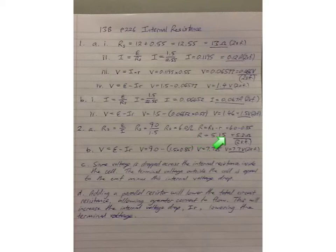The unknown value R, therefore, is 6 minus 0.85, which turns out to be 5.2 ohms to two significant figures.